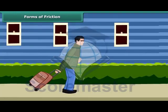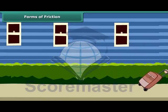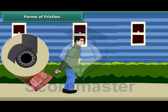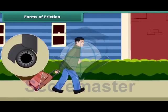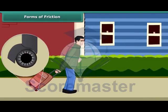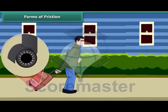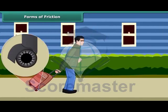You must have seen attaché cases and other pieces of luggage fitted with rollers. Even a child can pull such pieces of luggage. The rollers reduce friction and allow objects to roll. It is always easier to roll than to slide a body over another, and that is the reason it is convenient to pull luggage fitted with rollers.